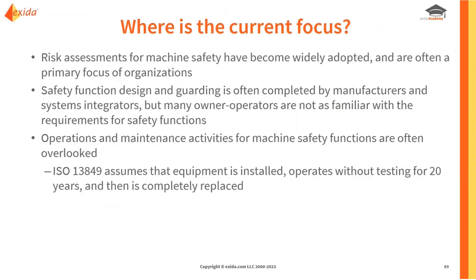Risk assessments for machine safety have become much more widely adopted and are often the starting point for organizations. If a company is not doing their own risk assessments, that's the first piece — you need to get there. The actual nuts and bolts of safety function design and guarding are often done by manufacturers and system integrators, and owner-operators may not be familiar with those requirements or what needs to be done to keep them working properly. Operations and maintenance is often overlooked and not emphasized in machine safety standards as much as in some other functional safety standards.